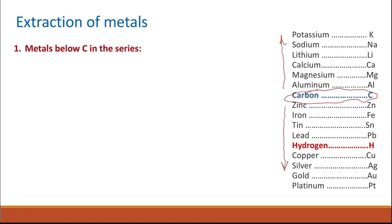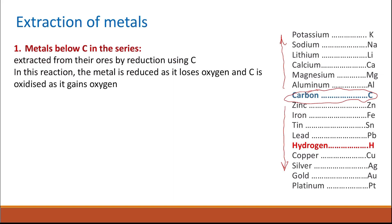Metals which are below carbon in the reactivity series are less reactive than carbon, which means they can be extracted from their ores by reduction using carbon. In this reaction, the metal is reduced as it loses oxygen, and carbon is oxidised as it gains oxygen. For example, iron oxide (Fe2O3) plus carbon gives iron and carbon dioxide. Iron was reduced because it lost oxygen, and carbon was oxidised as it gained oxygen.